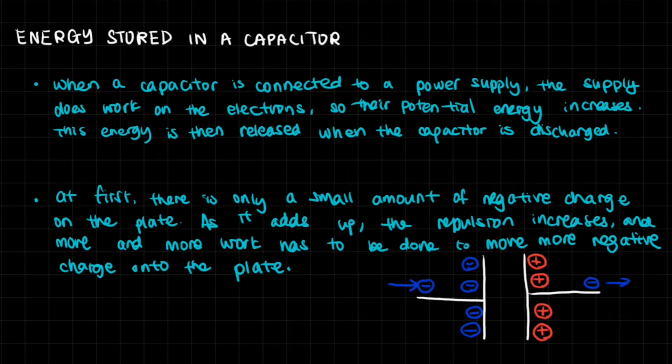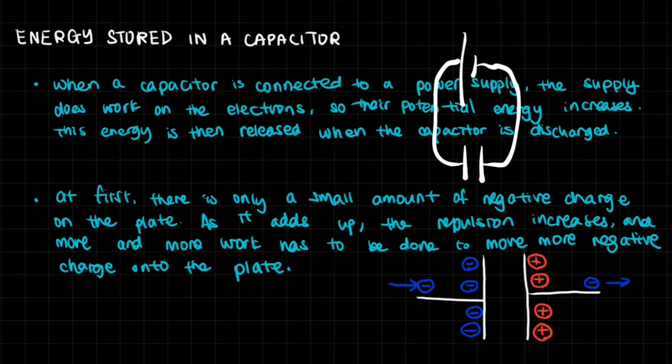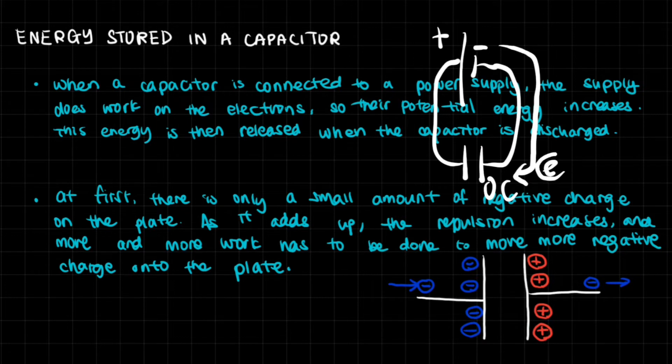So let's say that you have connected your capacitor, which is uncharged, to a power supply. At first, there is only a small amount of negative charge on the plate. So imagine this. You have your uncharged capacitor and you connect it to a cell. One part, the short stick, would be negative. The longer stick would be positive. At first, this has no positive or negative charge. It all adds up to zero coulombs. However, once you start connecting it, then the electrons will move from the negative terminal in there.